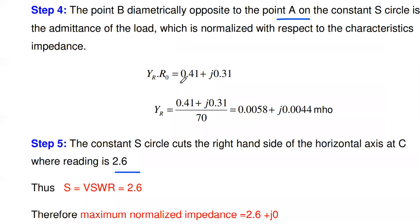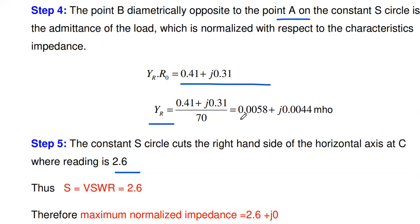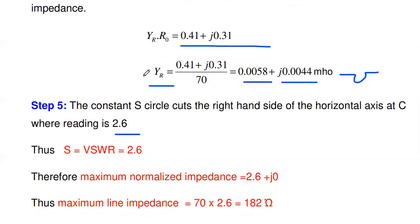From the normalized admittance value 0.41 + j0.31, the actual load admittance is calculated by dividing by the characteristics resistance R0 = 70. So load admittance = (0.41 + j0.31) / 70 = 0.0058 + j0.0044 mho (siemens). Admittance is thus found by extending the impedance line to the opposite direction and reading off the constant S circle intersection.